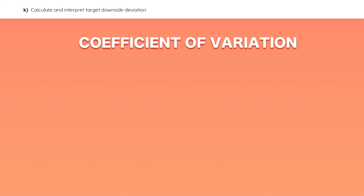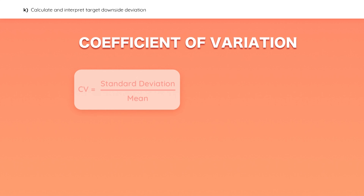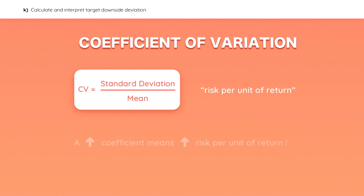You should also be familiar with the coefficient of variation, which expresses the standard deviation relative to the mean — another way to think about it is as the risk per unit of return. When comparing investments, the higher the coefficient of variation, the more risk the investor is taking per unit of return.